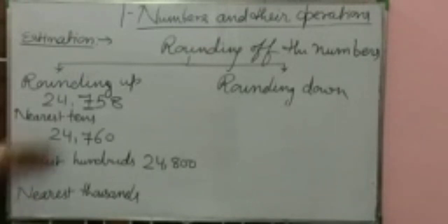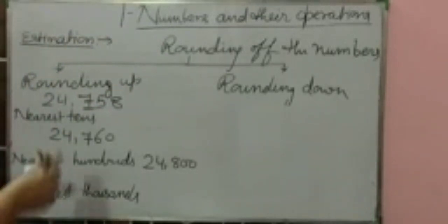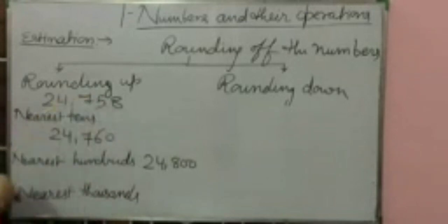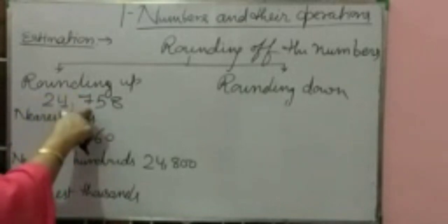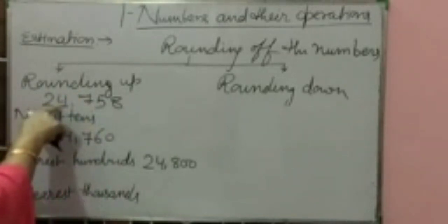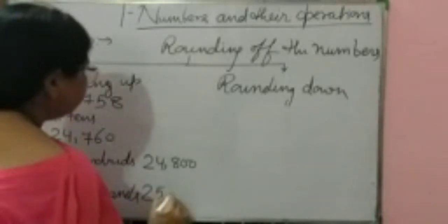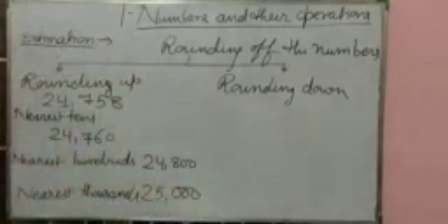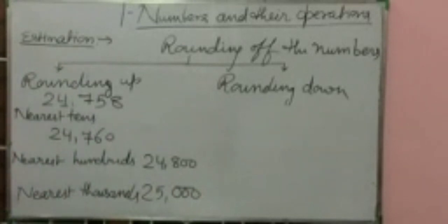Next: rounding off 24,758 to the nearest thousands. Underline the digit which is in the thousands place. In the thousands place we have 4. To the right of 4 is 7. Since 7 is more than 5, 4 will change — 4 gets plus 1. So the new number is 25,000.